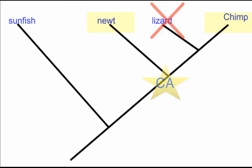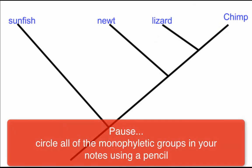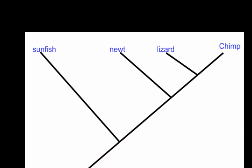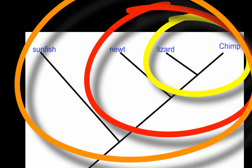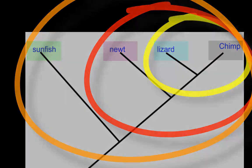Can you identify all of the monophyletic groups on this cladogram? Circle them in your notes and unpause when you're ready to discuss. According to this cladogram we have one, two, three monophyletic groups. I would also add all the individual species alone — just the chimp by itself is monophyletic, just the lizard, just the newt, and just the sunfish — because you can find a common ancestor shared between all of them and include just that particular organism.